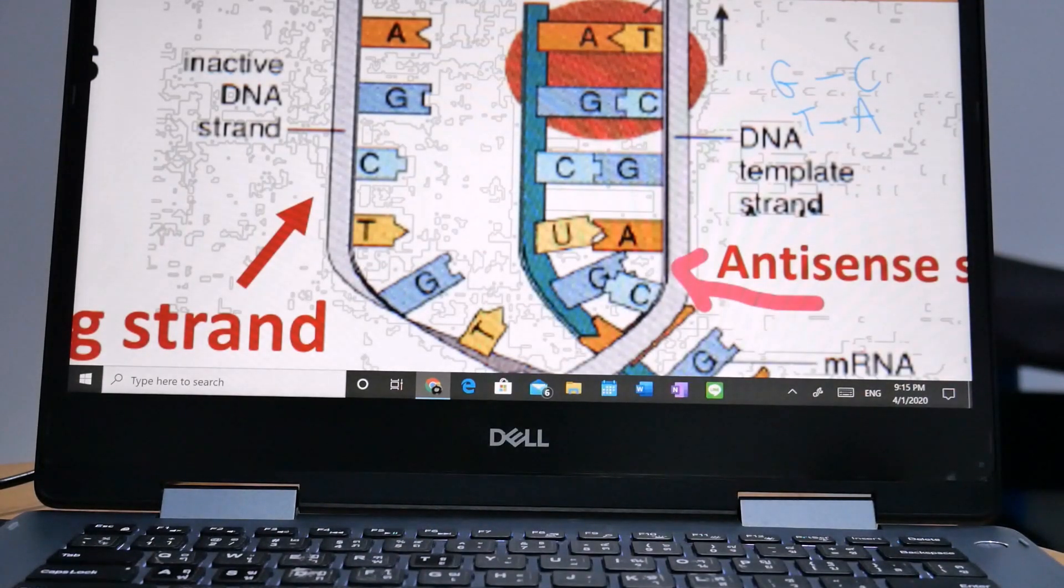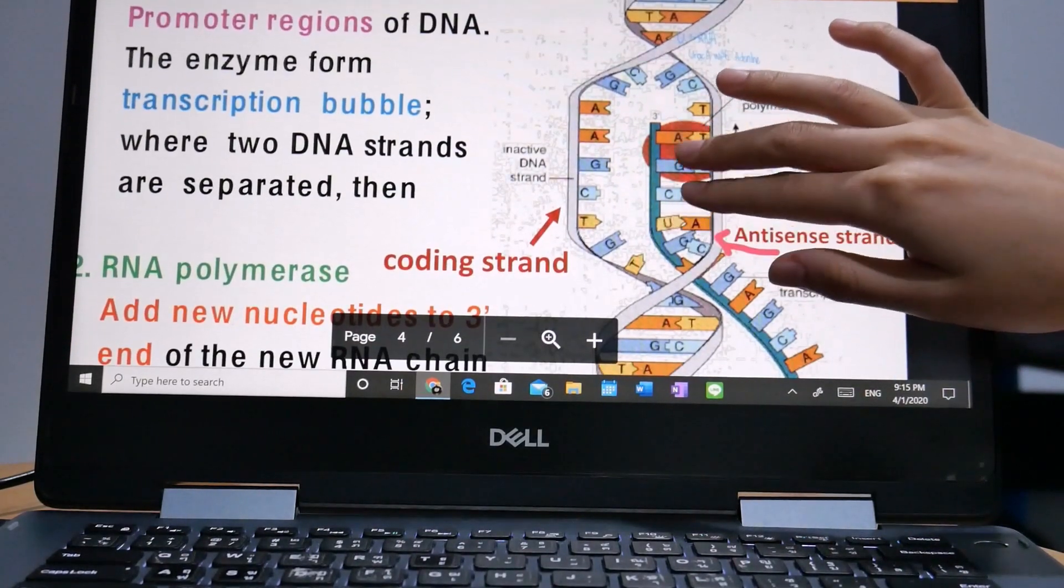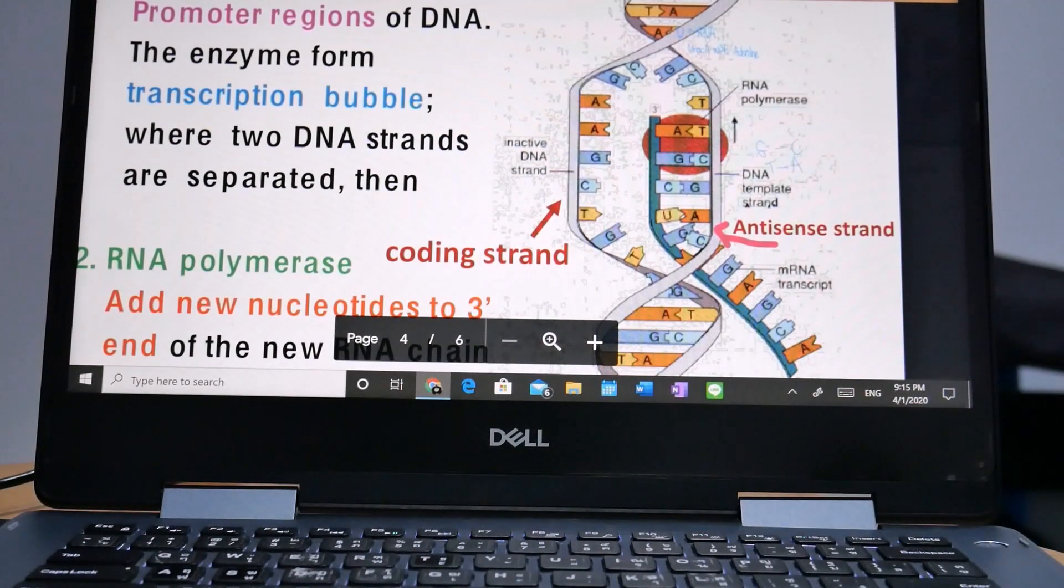And now to termination. A sequence called the terminator signals that the RNA transcript is complete. Once they are transcribed, they cause the transcript to be released from the RNA polymerase.